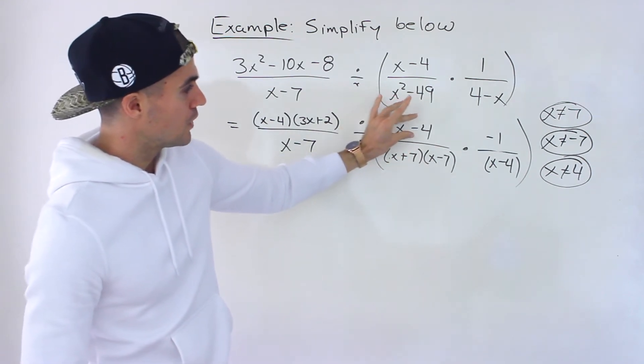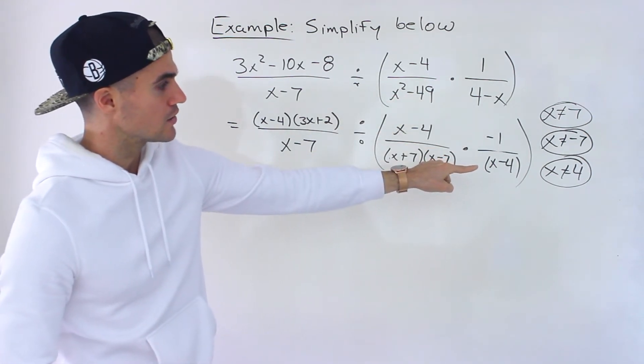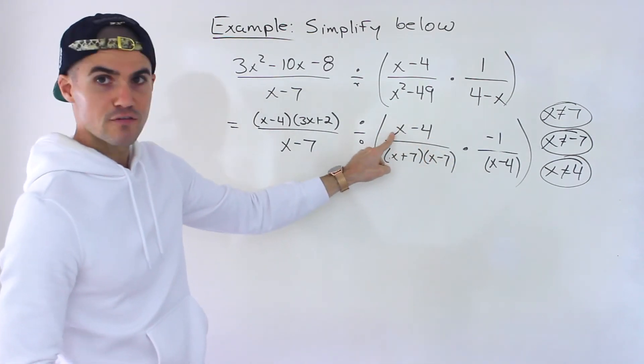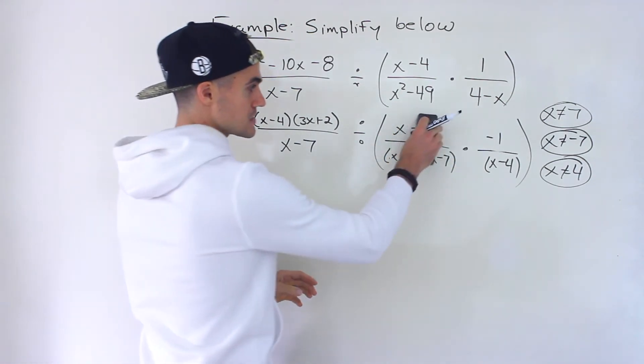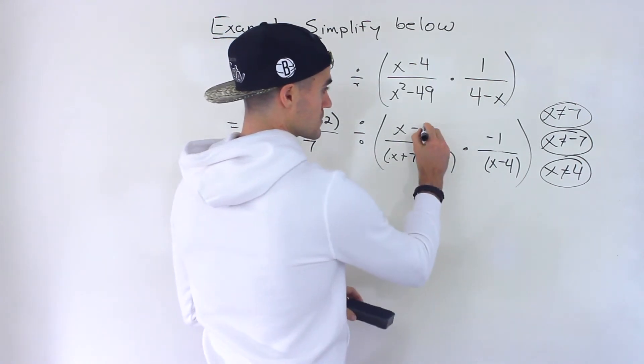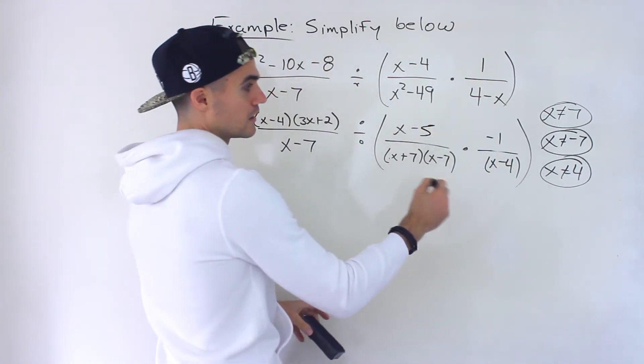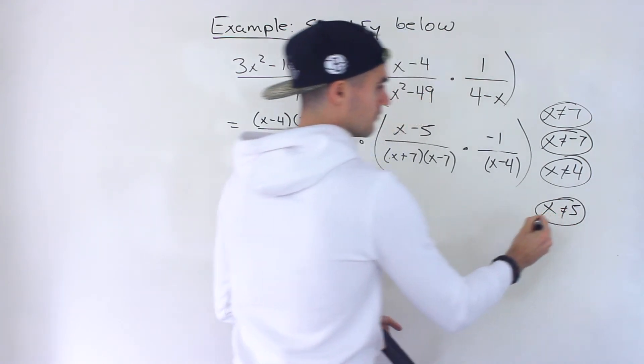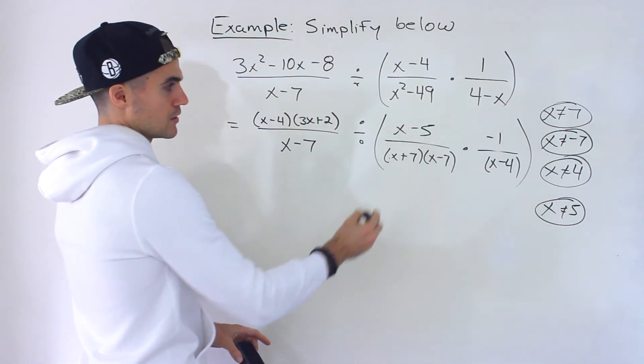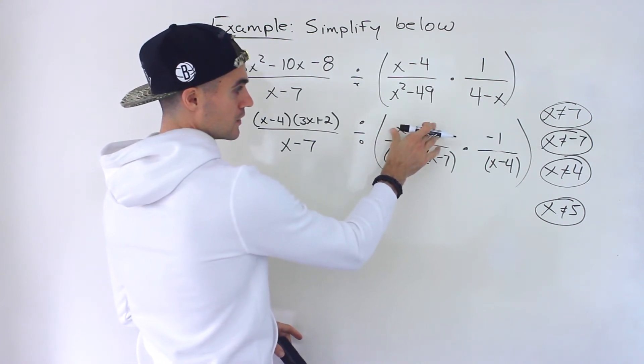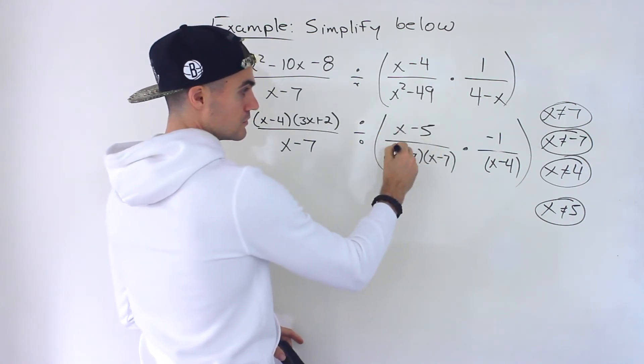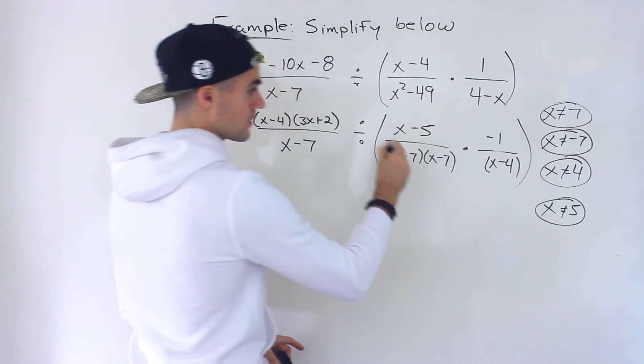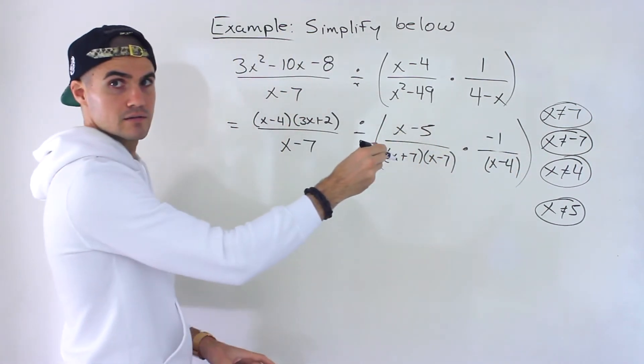But we already have the restriction x cannot equal 4 from here. So this factor is taken care of. But this if this was like x minus 5 for example then another restriction would be x cannot equal 5. Because an x value of 5 would make this 0 multiplying by this so it would make this entire bracket 0 and you can't be dividing by 0.